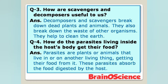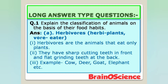Here are some long answer type questions. Question number one: Explain the classification of animals on the basis of their food habits. A. Herbivores — 'herbi' means plant, 'vore' means eater. Point 1: Herbivores are the animals that eat only plants. Point 2: They have sharp cutting teeth in front and flat grinding teeth at the back. Examples: cow, deer, goat, elephant, etc.